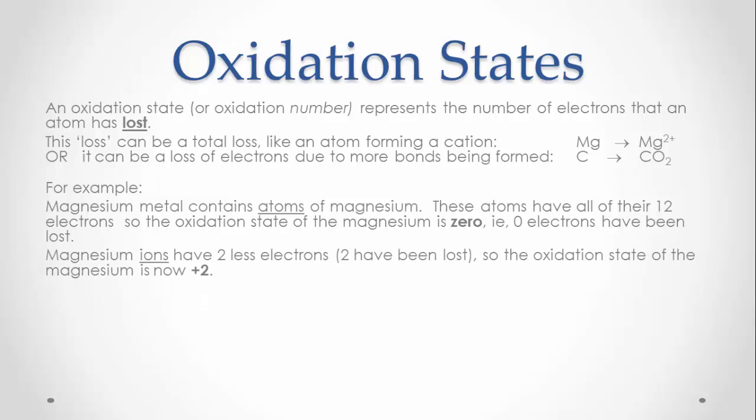Magnesium ions have two fewer electrons, so the oxidation state of the magnesium is now positive two — that is, two electrons have been lost from the magnesium.